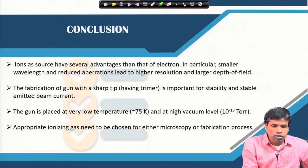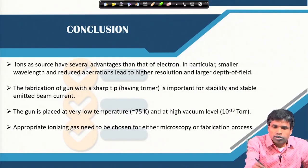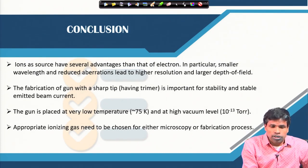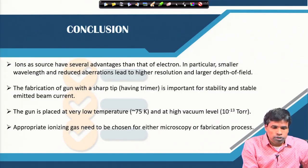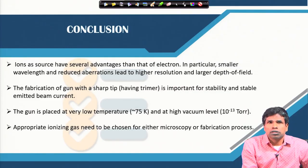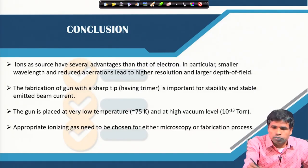In conclusion, what we have seen in today's and the last lecture is that ions as a source have several advantages over electrons. In particular, ions have a smaller wavelength, reduced aberration, which leads to high resolution and large depth of field. The fabrication of the gun with a sharp tip having a trimer is important for stability and stable emission; the gun is placed at low temperature and very high vacuum, and appropriate ionization gases should be chosen for the microscopy or fabrication process.